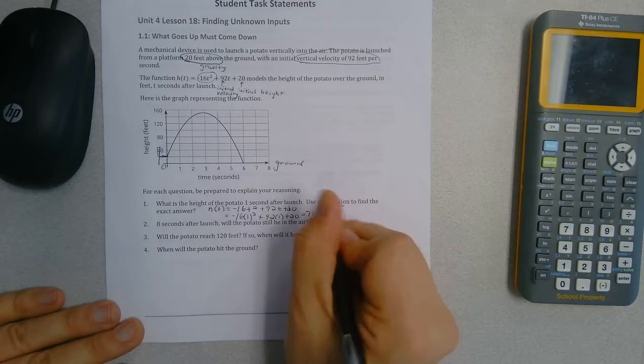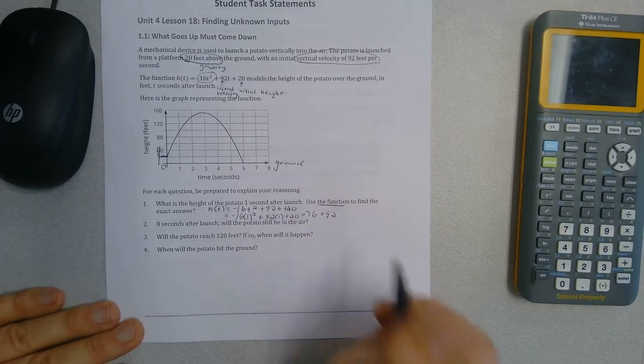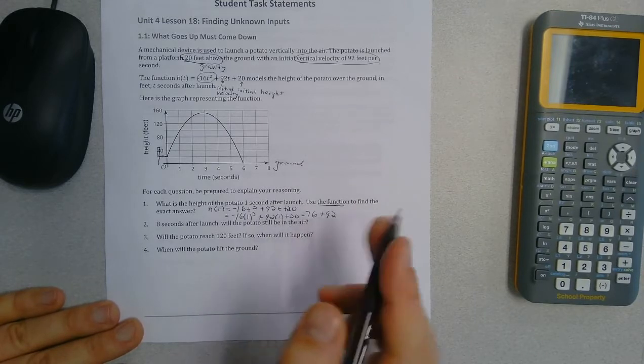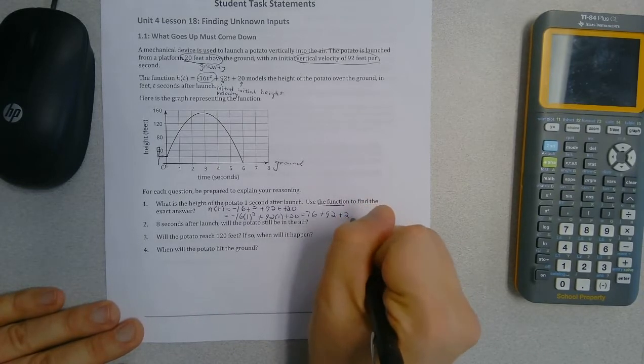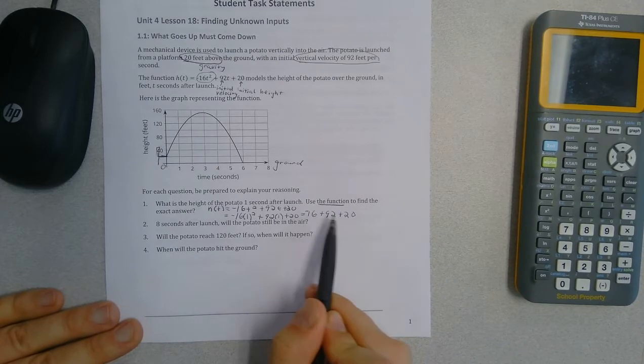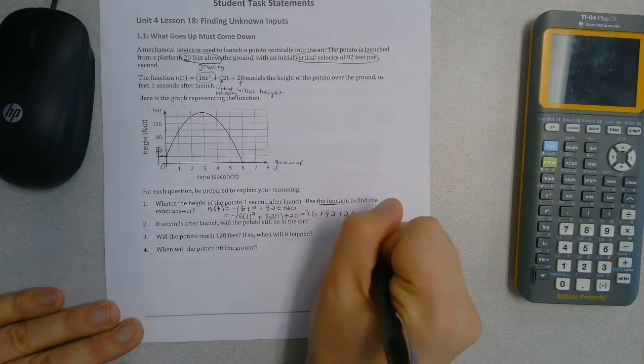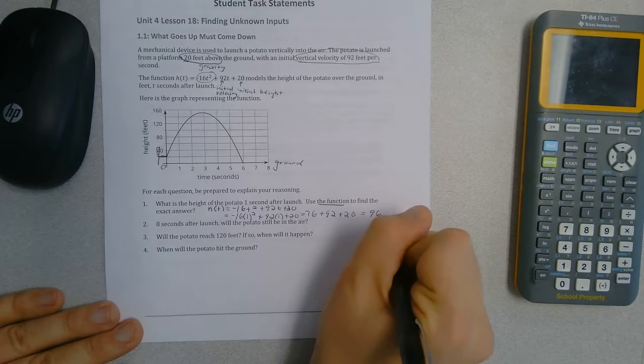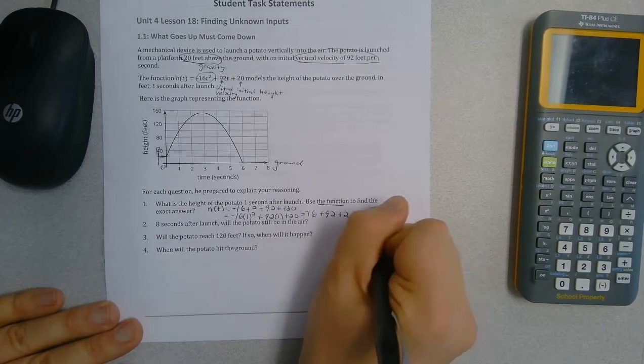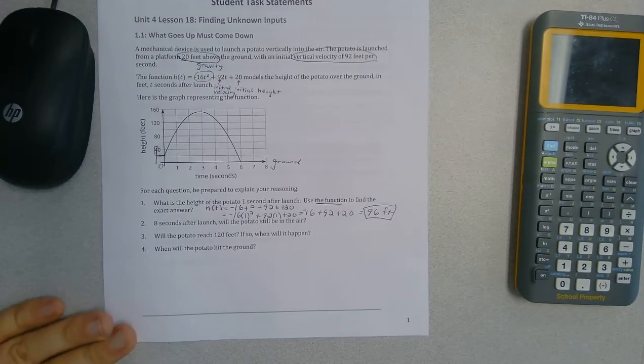And then 92 times 1, I just add 92. And then here I add 20. Now, what I do is I take 20 and then subtract 16 and get 4. Add that to 92 and I get 96 feet for my unit. So that would be my final exact answer.